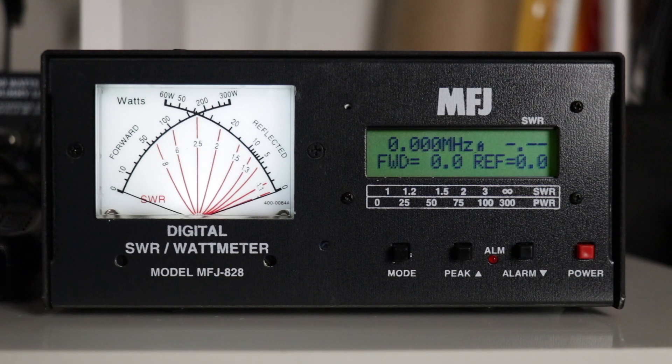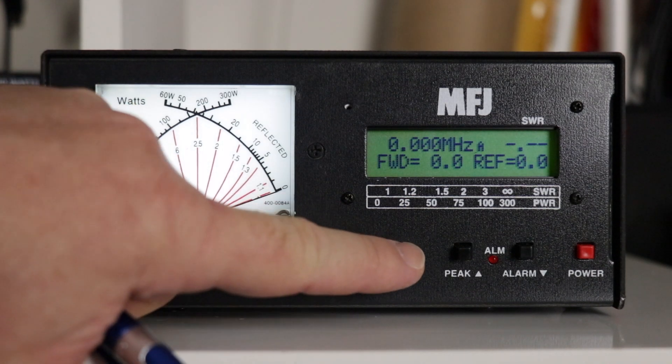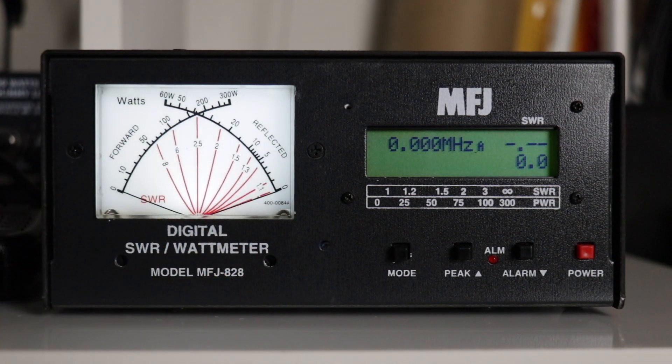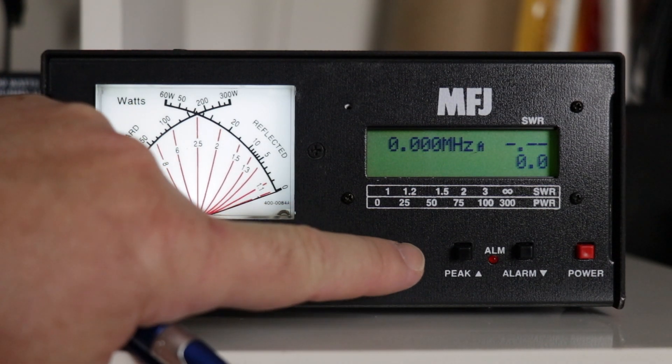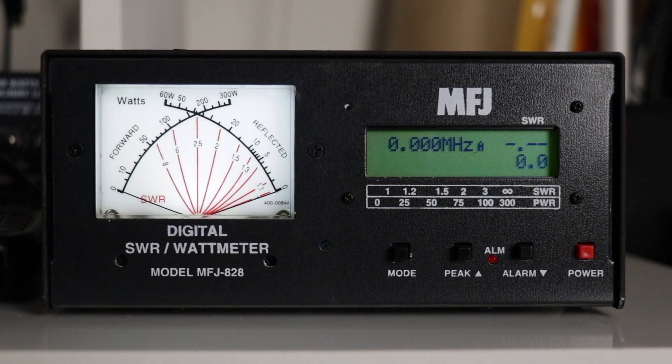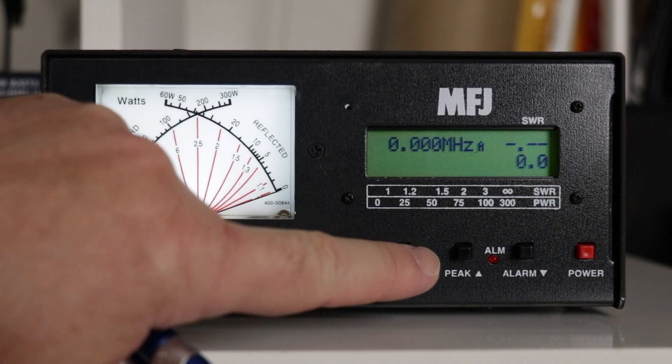The first press will show you the bar graph with forward power on the top and reflected power on the bottom. Another press just shows SWR through a thick bar. And then with the third press, you'll see everything is a bar.